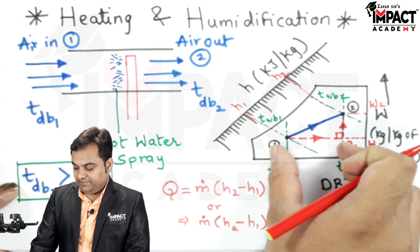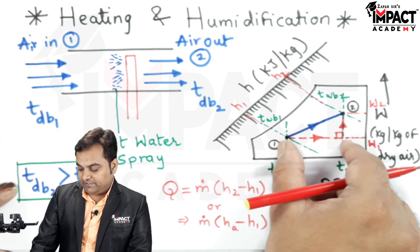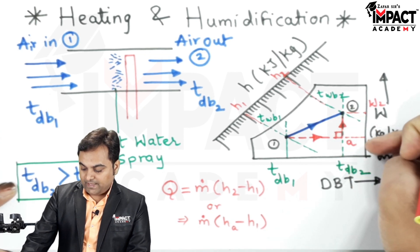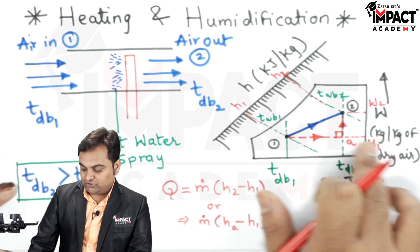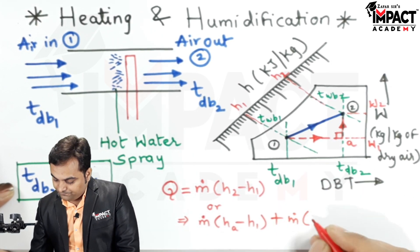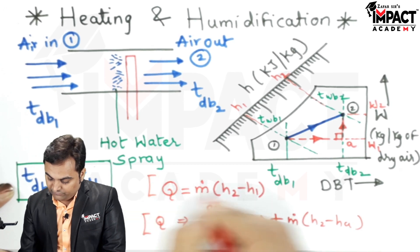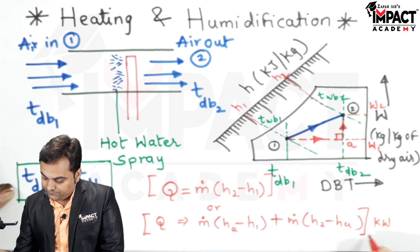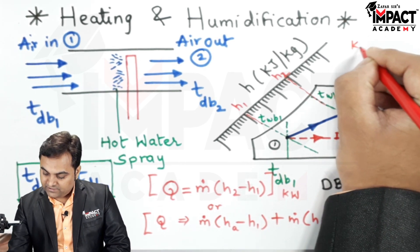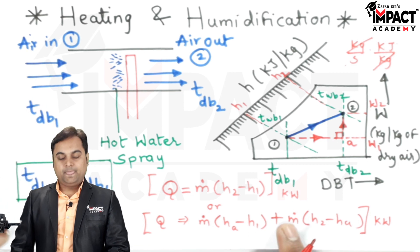Heating and humidification can be summarized as sensible heating plus latent heating. In sensible heating, moisture content stays the same while temperature changes. In latent heating, dry bulb temperature remains constant while moisture is added. So the total is: Q = ṁ(ha − h1) + ṁ(h2 − ha). The unit is kilowatts because mass flow rate in kg/s multiplied by enthalpy in kJ/kg gives kJ/s, which equals kilowatts.